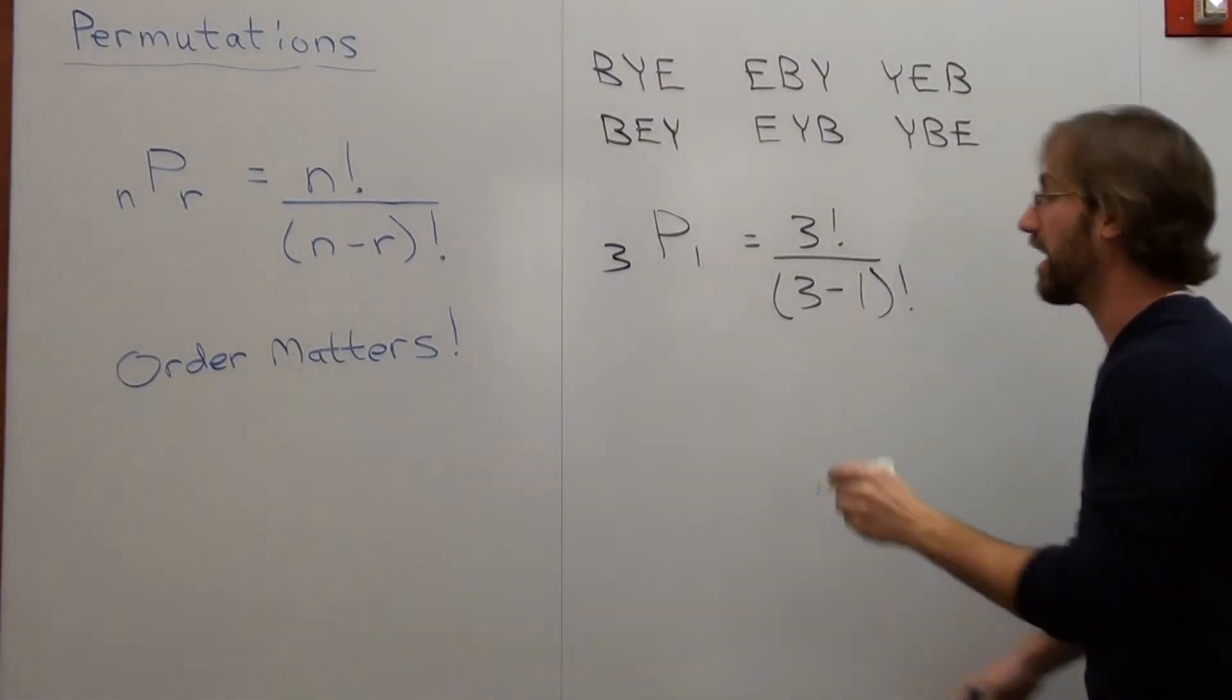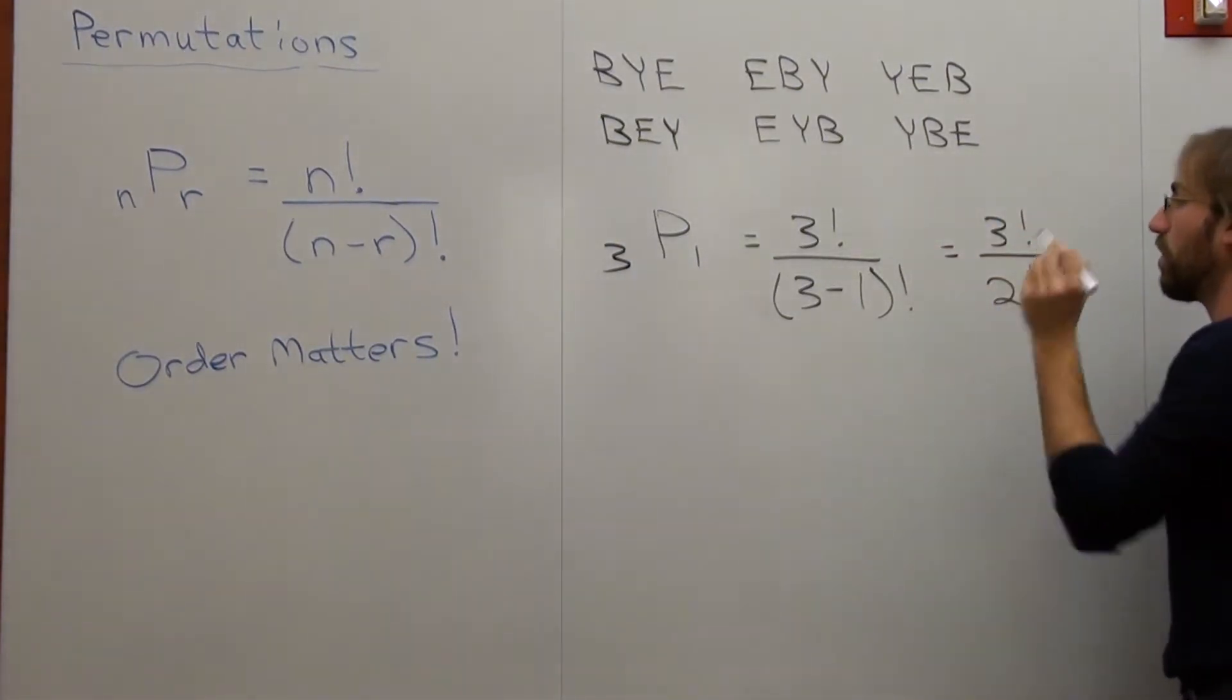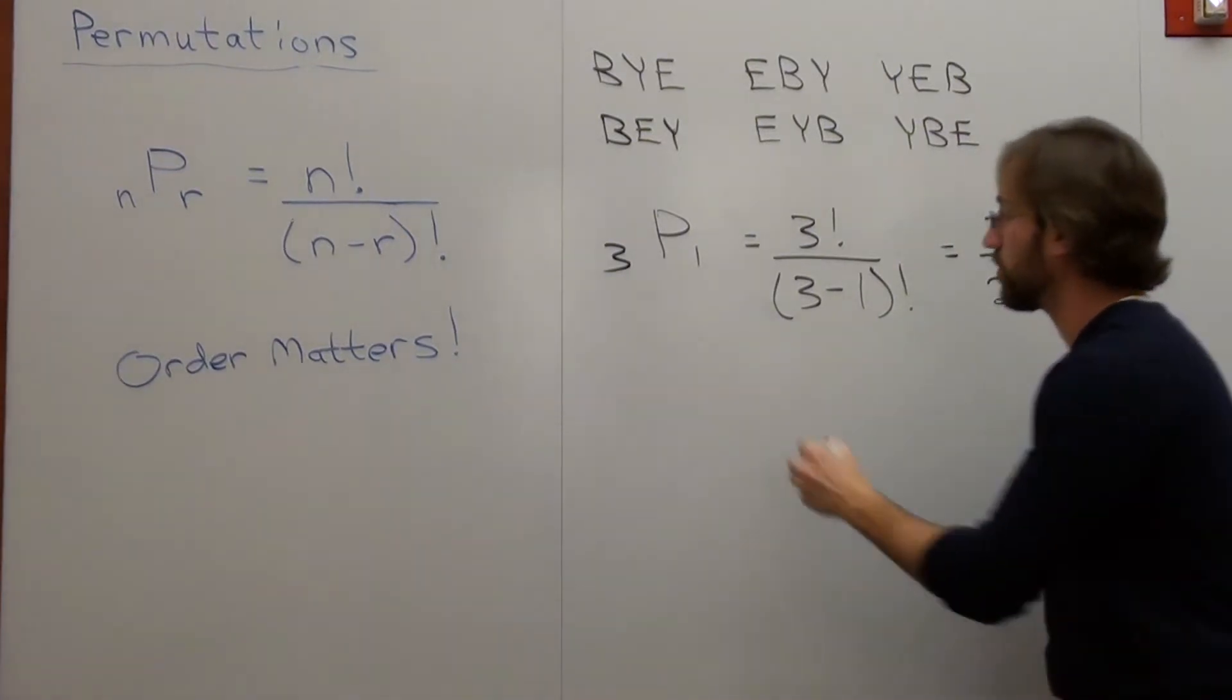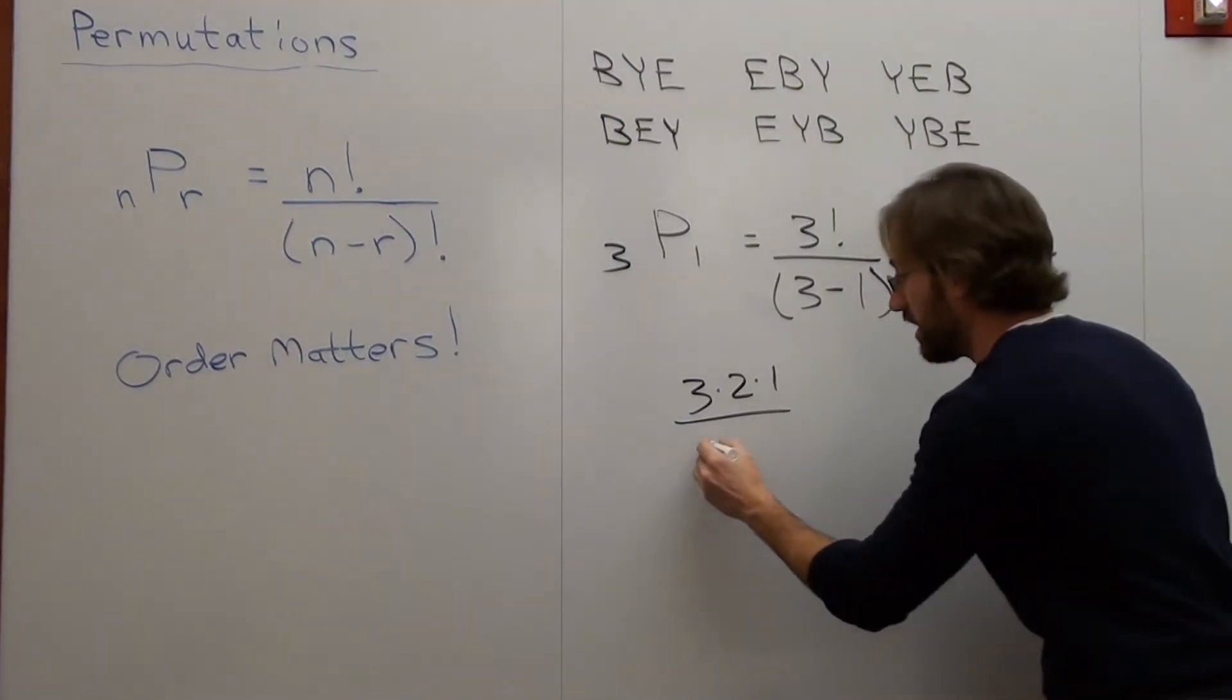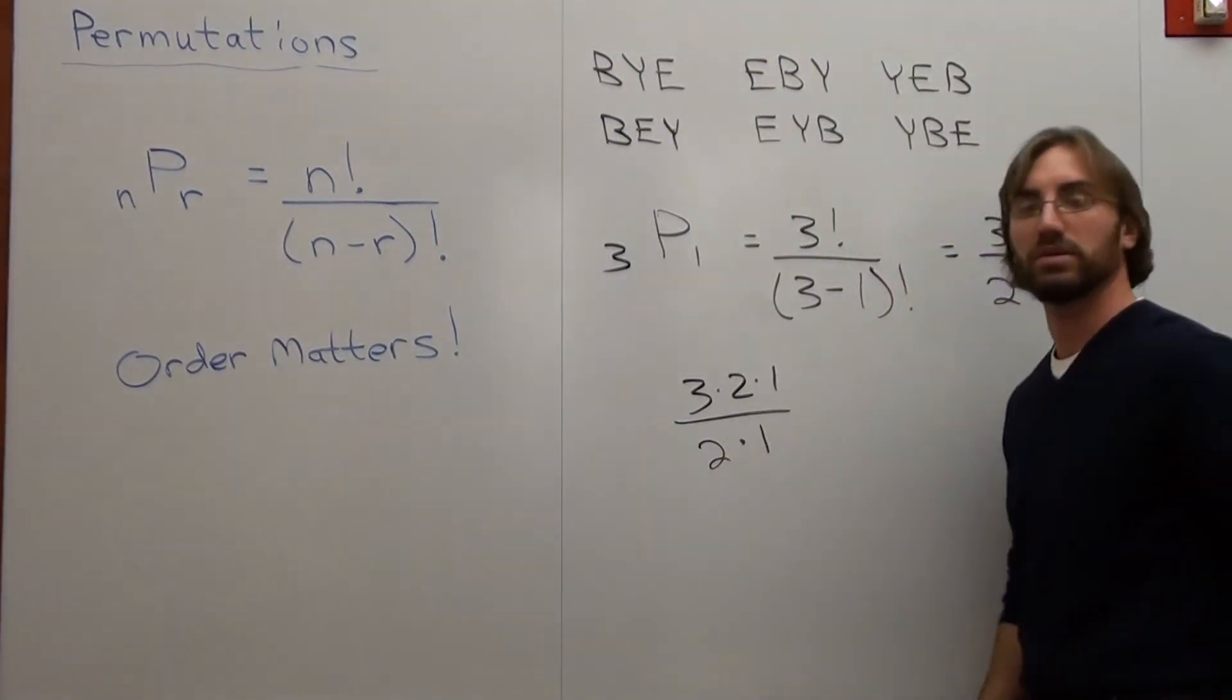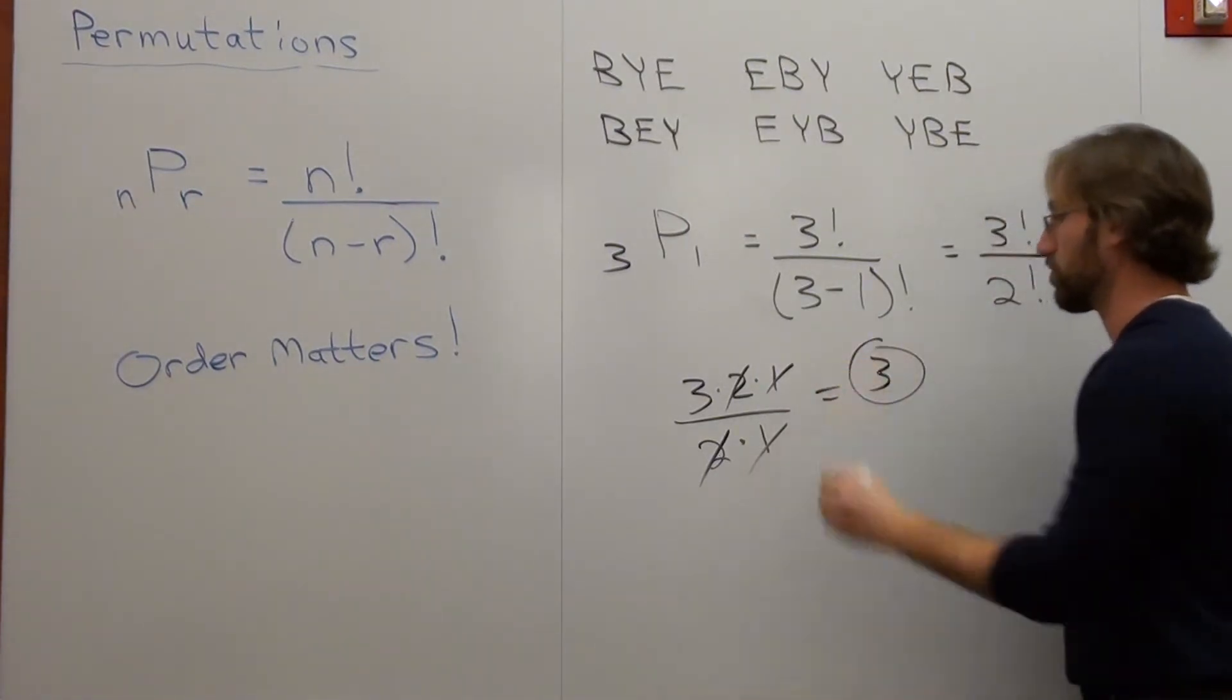Subtract one factorial. That's the same thing as three factorial over two factorial. Three factorial can be written like this: three times two times one. Two factorial can be written like this: two times one. Answer is three.